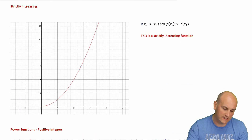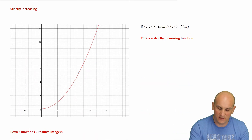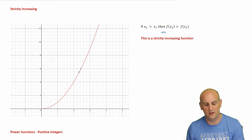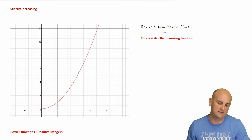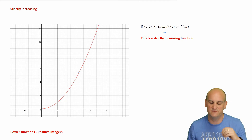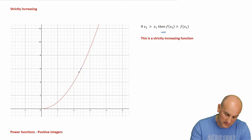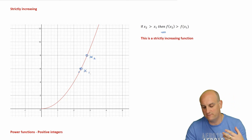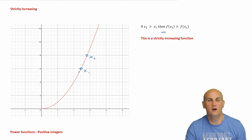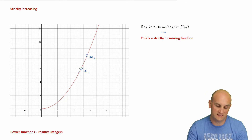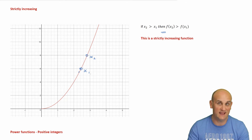So what about strictly increasing? Well it just does it the other way around. If x2 is greater than x1, and the function of x2 is greater than the function of x1, it's strictly increasing. So if x2 is greater than x1, and the y value of x2 is greater than the y value of x1, it is strictly increasing. Again, not particularly challenging.